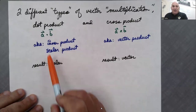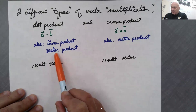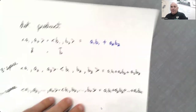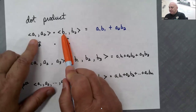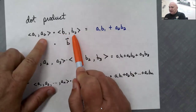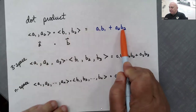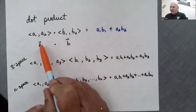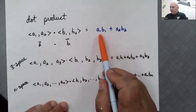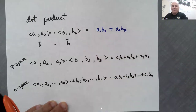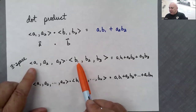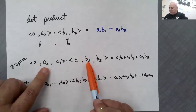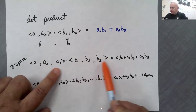Let's spend some time on the dot product or scalar product. The dot product is really easy. You multiply the first components together, multiply the second components together, and add them. A dot B gives you a number — a number plus a number gives you a scalar. For a vector in three-space, you multiply the first components, second components, third components, and add them.